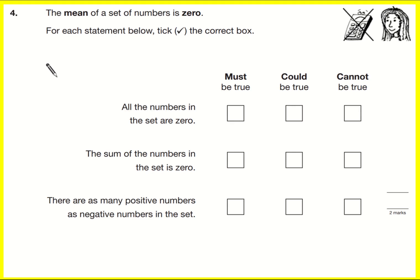Are I asked to tick the correct box? Actually, we're not asked for explanations, but it's still worth thinking about things carefully in this question. So we've got the mean of a set of numbers is zero.